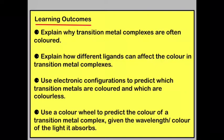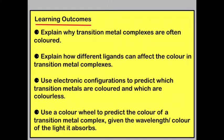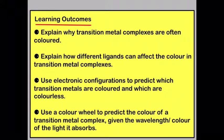By the end of this lecture, you should be able to explain why transition metal complexes are often coloured, explain how different ligands can affect the colour in transition metal complexes, use electronic configurations to predict which transition metals are coloured and which are colourless, and finally, use a colour wheel to predict the colour of a transition metal complex given either wavelength or the colour of the light it absorbs.